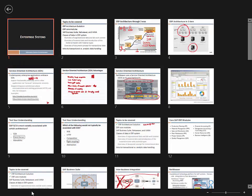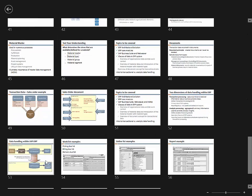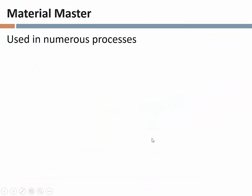We had left off with our discussion on the material master and had pretty much come to the conclusion of that material. We had one slide left that I don't think we talked about last time, which talks about all the different processes that the material master is used in. We're not going to dig into this in great detail, but the material master is obviously used in procurement.